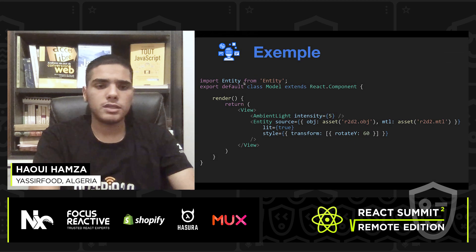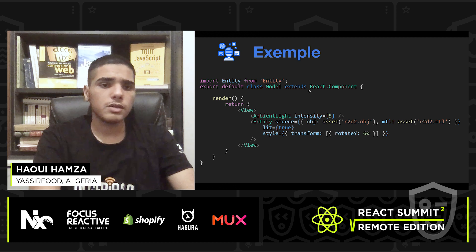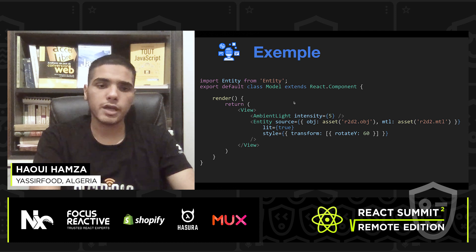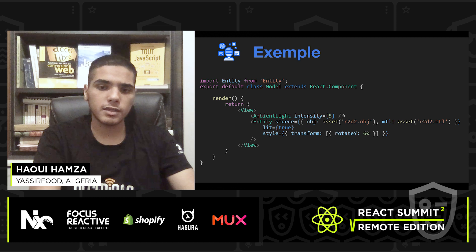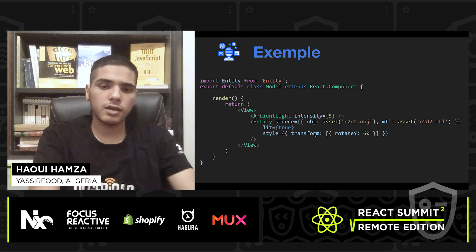Here is an example of how to add a 3D object into our VR application. All we have to do is import Entity from the entity module. Entity is used to render 3D objects in React 360. We use the ambient light for light intensity and use the source to provide the link to our object. Our object has two extensions: the object file and the material file. We can style it using transforms and many other options.